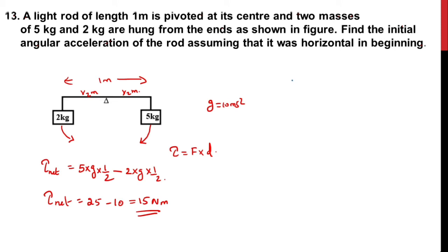Here the question is asking for the initial angular acceleration, so we can use the formula τ = Iα. Therefore, τ_net equals I_net times α. What is the angular acceleration? α equals net torque divided by net moment of inertia.